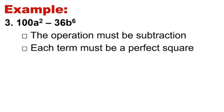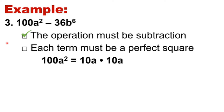Another example: 100a squared minus 36b raised to 6. Is the operation a subtraction? Yes, the given polynomial has a minus sign. Each term must be a perfect square. Is 100a squared a perfect square? Yes — 100a squared is from 10a times 10a. Is 36b raised to 6 a perfect square? Yes — 36b raised to 6 is from 6b cubed times 6b cubed. We satisfy the second requirement.